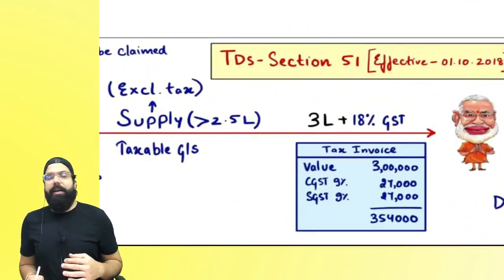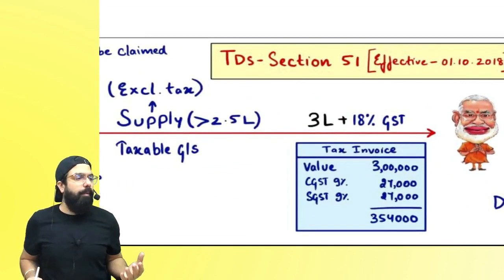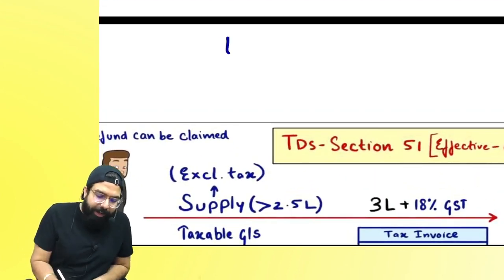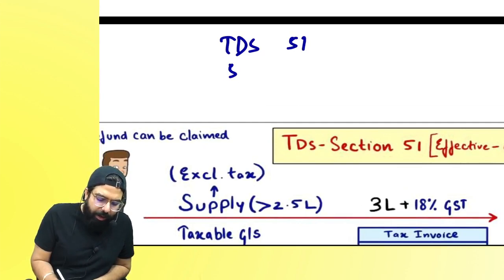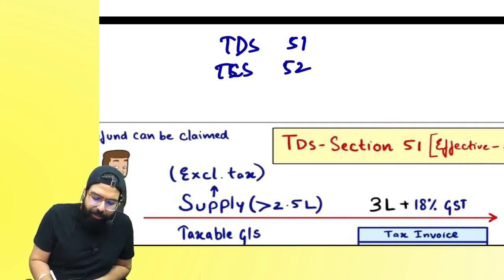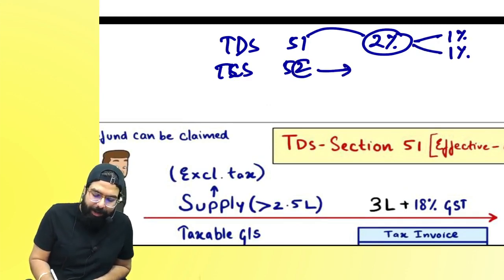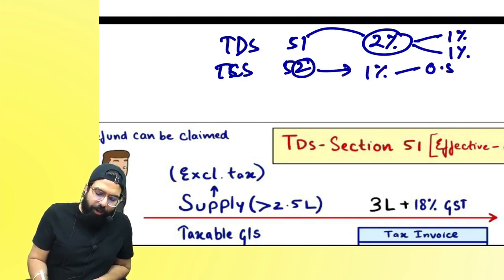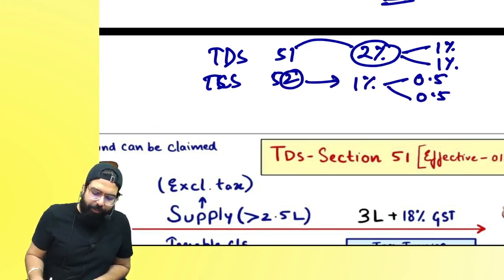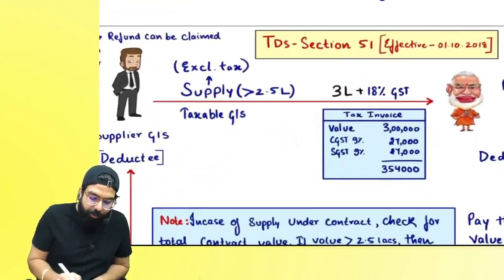TDS is under Section 51 and TCS is under Section 52. Under Section 51, the rate is always 2%, which is 1% CGST and 1% SGST. Under Section 52, it is always 1%, which is 0.5% CGST and 0.5% SGST.